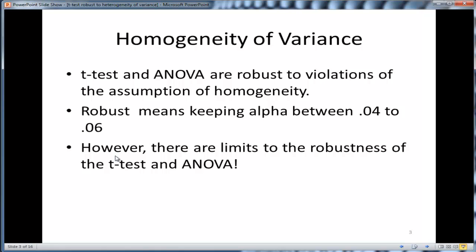It's true that t-test and ANOVA are robust to violations of the homogeneity of variance assumption, but there are actually quite obvious limits to that, though the limits are quite substantial. In this presentation, I'm going to point out what those limitations are, particularly in the context of unequal sample sizes, which really complicates things.